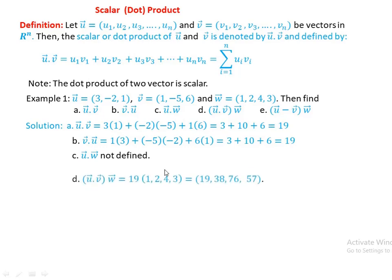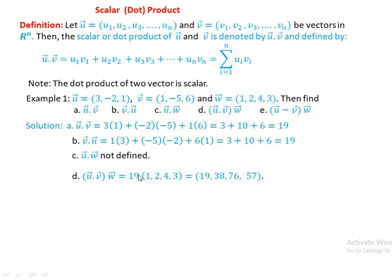For part d, (v·u) times w: since v·u equals 19, this is the scalar 19 multiplied by the vector w. This is scalar multiplication of vector w by 19, not a dot product — it is a scalar times a vector.